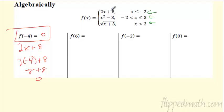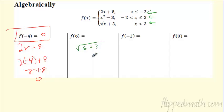How about the next one? If I plug six in, where does six go? Well, it's not less than negative two, it's not sandwiched between negative two and three, but it is greater than three. So I'm going to put it in the last function — the square root. x is six, so it's going to be square root of six plus three, which is square root of nine, and that is three.